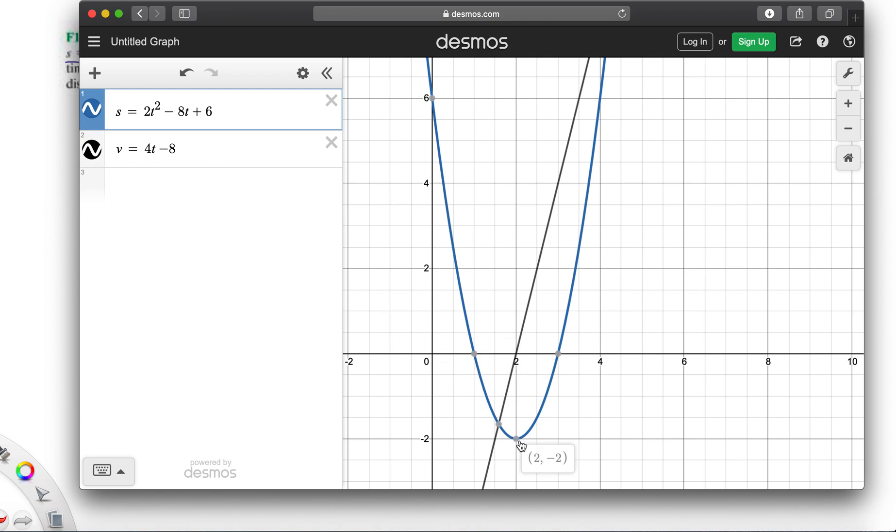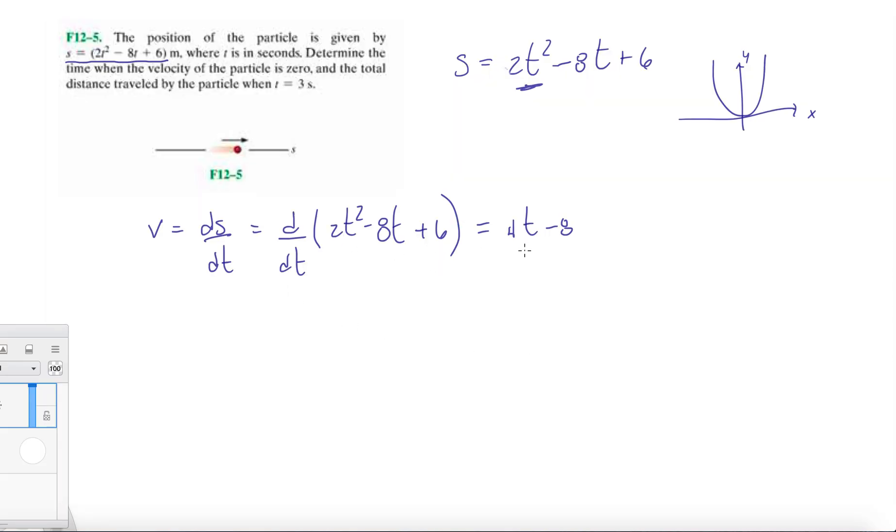So there's our velocity in black. At time equals 2, our velocity is equal to 0, which validates our equation.